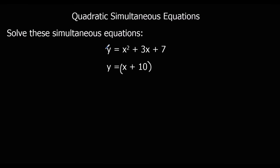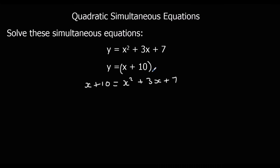So this becomes x plus 10, giving me x plus 10 equals x squared plus 3x plus 7. Now to solve a quadratic, I need to make it equal to 0.